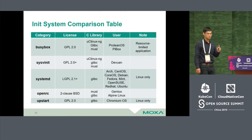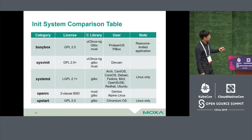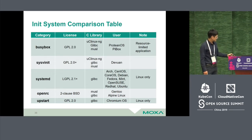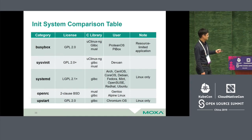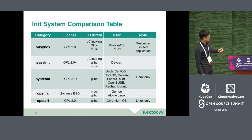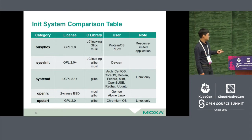The init system is the first application executed by the kernel — it manages applications and services. Open source tools include BusyBox init, sysvinit, systemd, and OpenRC. Typically in the past, embedded systems used BusyBox because it's very tiny and easy to use. However, the industrial platform connected to the internet is a trend, so many devices now use systemd or OpenRC. You can choose your own init system depending on your application. Note: BusyBox supports musl, uClibc, and glibc; systemd only supports glibc — so if you want to use uClibc Linux, systemd is not suitable.